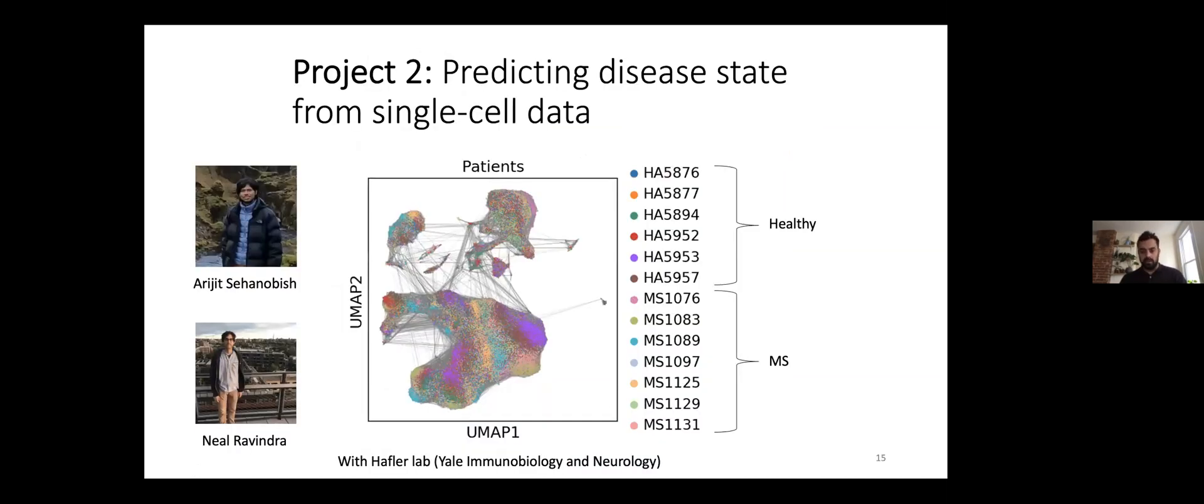Another project based on single cell RNA sequencing is a project where we set out to predict disease state from single cell data. This project was led by two postdocs in the lab, Arjit and Neil, and was a collaboration with the lab of David Hafler who's at Neurology and Immunobiology. David Hafler is an expert on multiple sclerosis. In this project they measured a really large data set of both healthy individuals and MS patients in single cells, measuring both blood and cerebrospinal fluid. We measured many single cells in many different individuals—healthy and disease. The idea is can we use the single cell data to predict disease state both at the single cell level and at the sample or patient level.